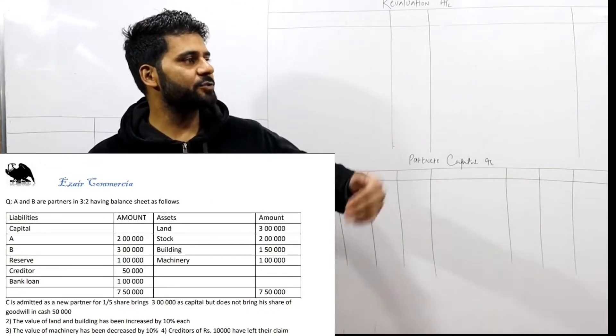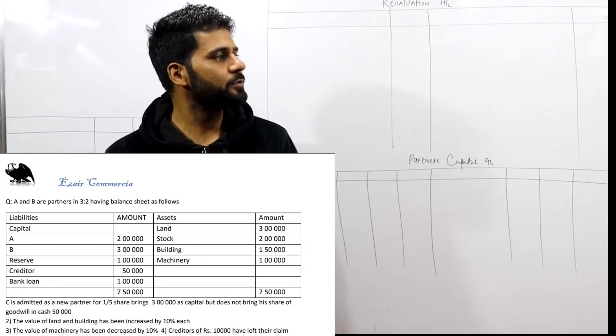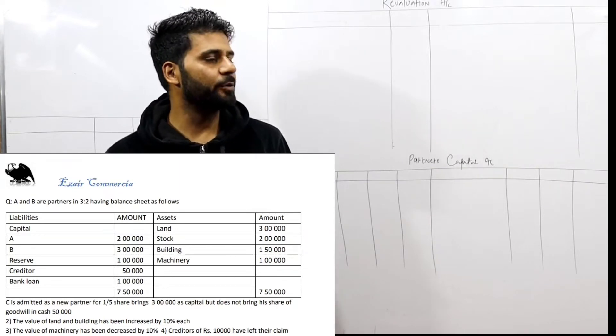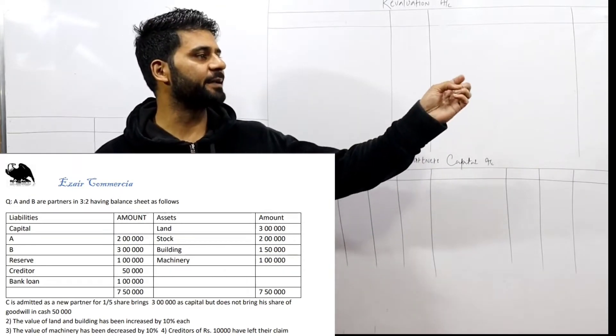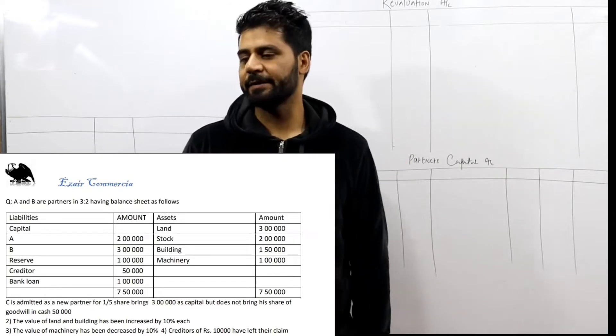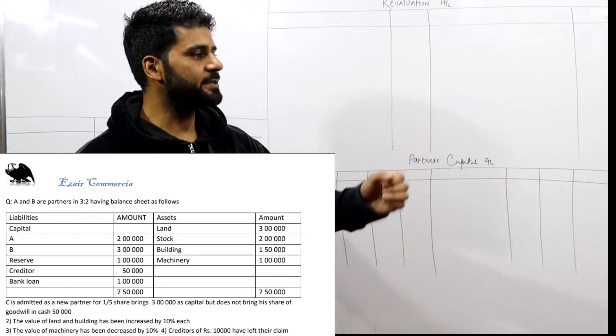Partners A and B are in 3:2 ratio having balance sheet as follows: Capital A and B and reserve, their credit and bank loan, land, stock, building and machinery.